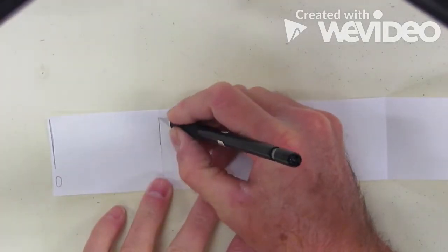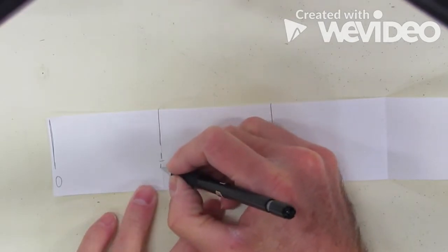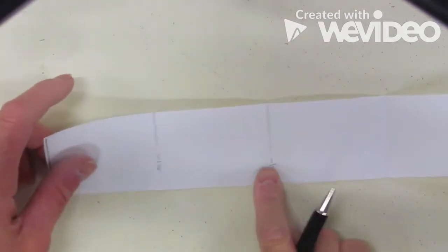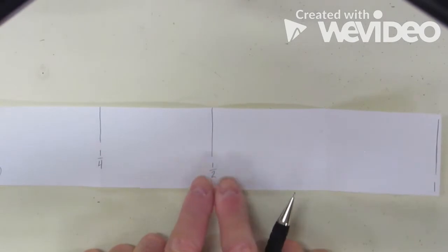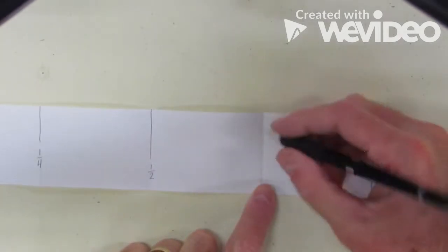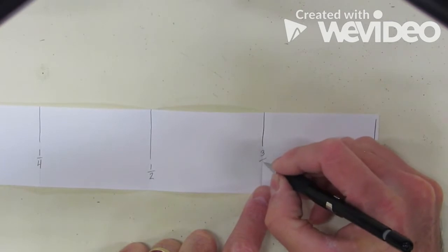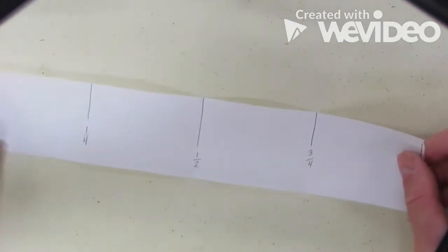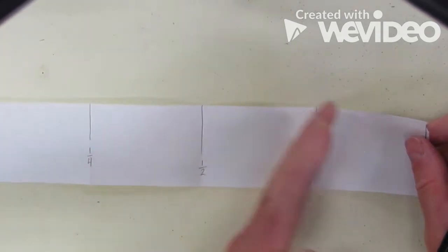So I want to make my line not quite as long. I'm going to call this 1 quarter. Half would be 2 quarters, but we never call half 2 quarters, it's always half. And then we come over here, this is going to be 3 quarters. So once I've done that, now I've got quarter, half, 3 quarters, 1.